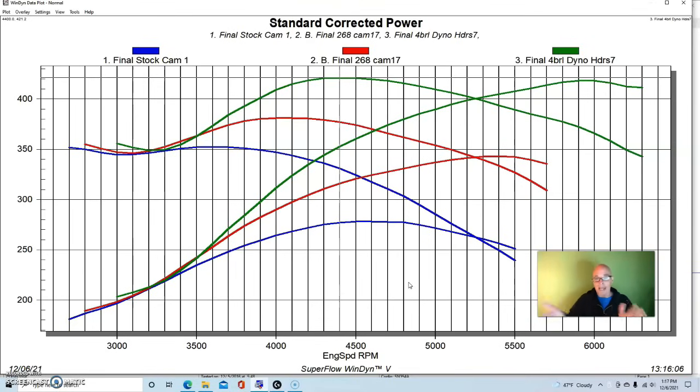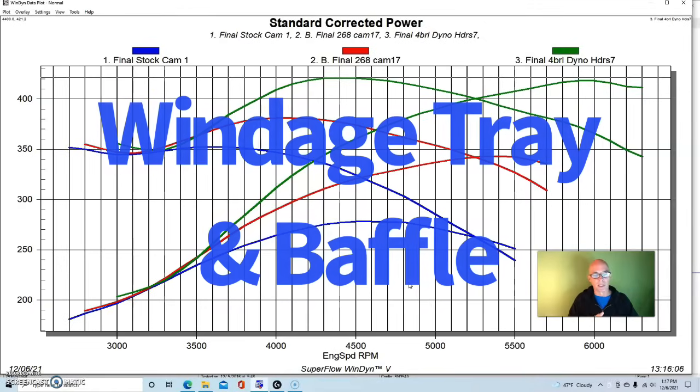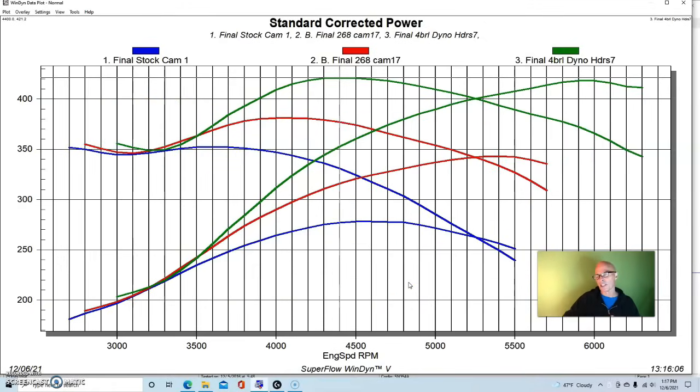While we had this thing apart, we also incorporated a windage tray, because we know that we were having oiling issues. This is even more important out on the track on the short track this combination was running on, less important